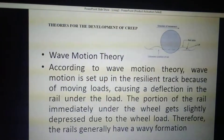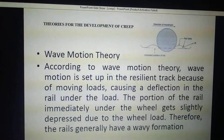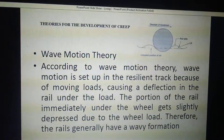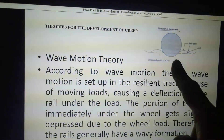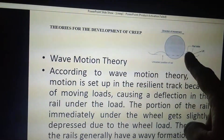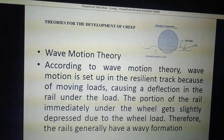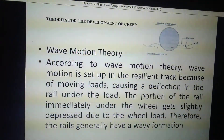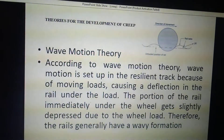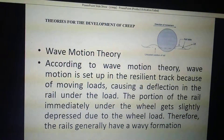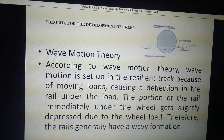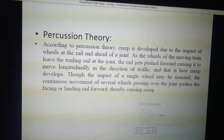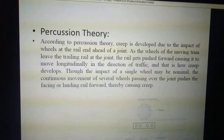The theories based upon creep are as follows. The first is the wave motion theory. In this theory, a wavy motion is created due to the moving load, which causes deflection in the rail under the load. The portion of the rail immediately under the wheel gets slightly depressed due to the wheel load; therefore, rails generally have a wavy formation.